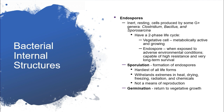Another internal structure I must mention before going into other topics is the spores, also known as endospores. Endospores are inert, resting cells produced by some Gram-positive genera like Clostridium, Bacillus, and Sporosarcina. These bacteria have two phases of their life cycle: vegetative cell as well as endospore.